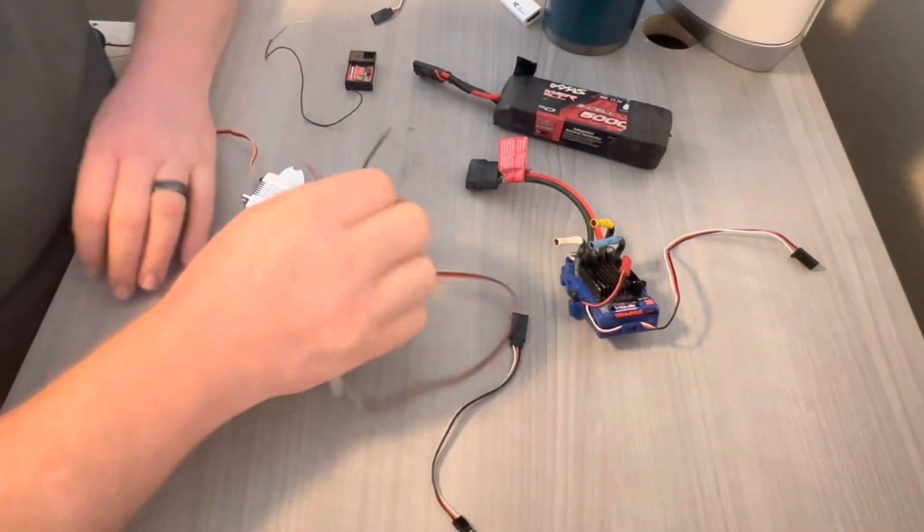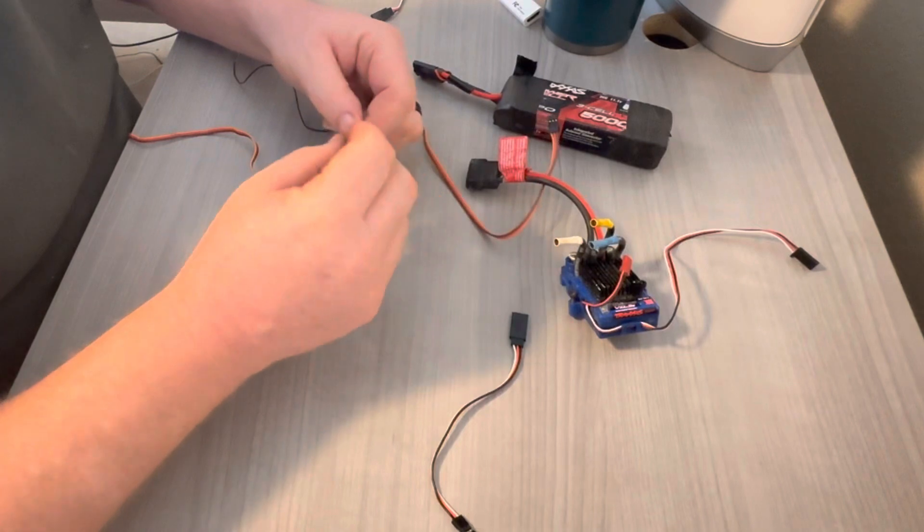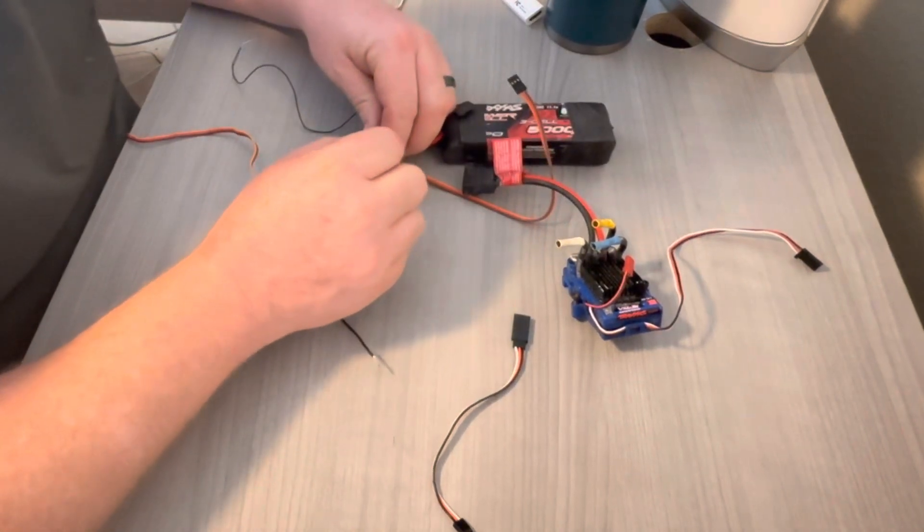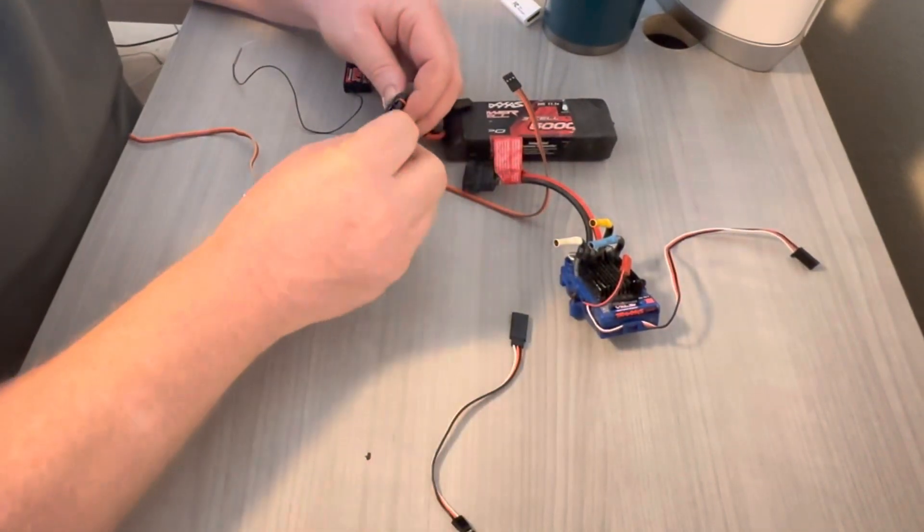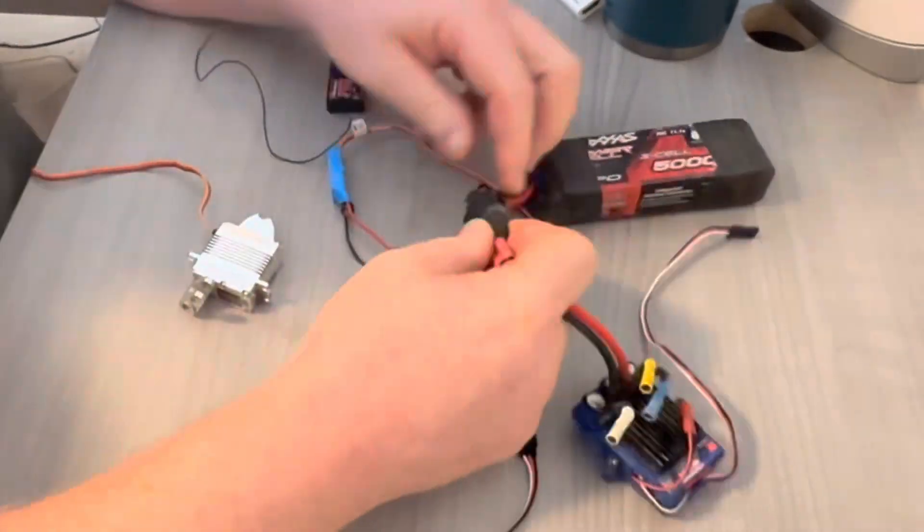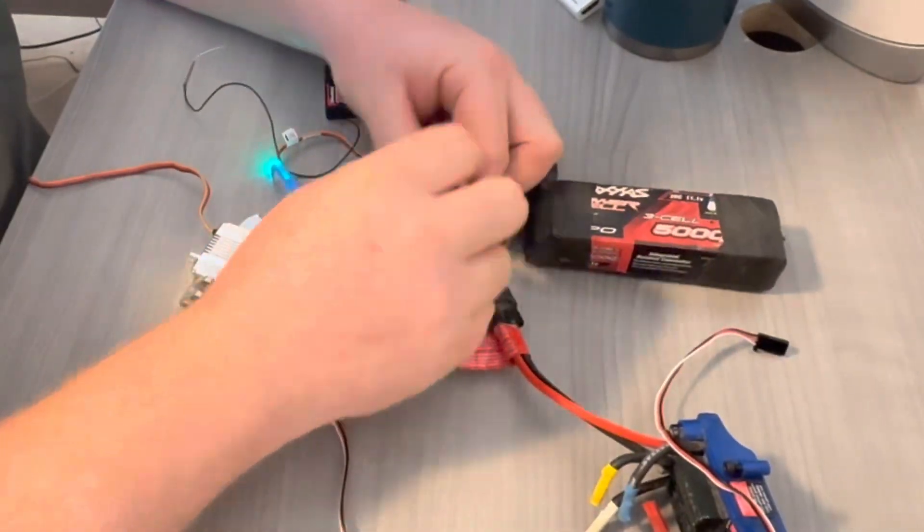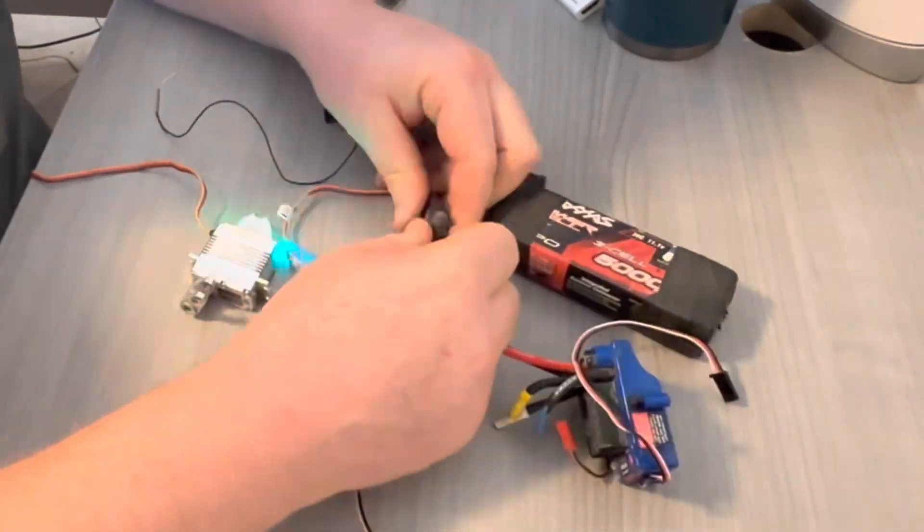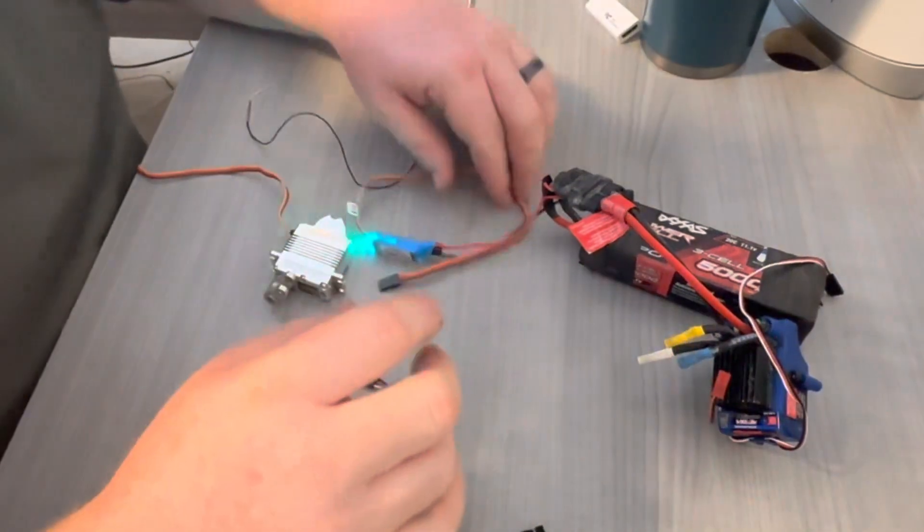So what you're going to do is hook these up directly to the battery, the one that I'm using. I'm not going to do that because I already have one installed. But for now, I'm just going to plug these in here. So go ahead and hook your BEC up.